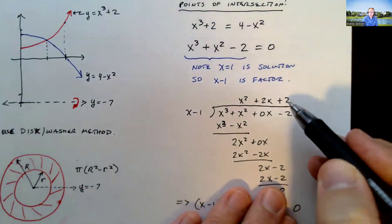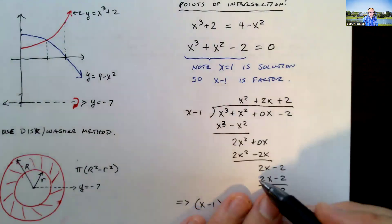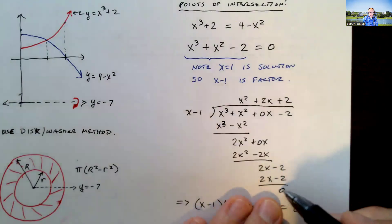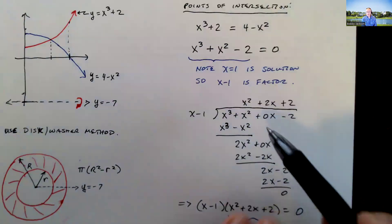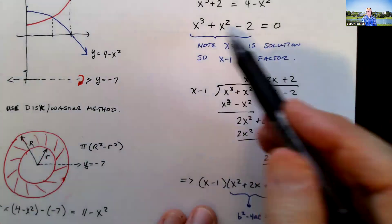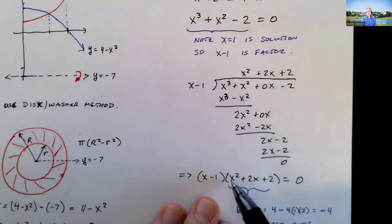Bring down our negative 2. x goes into 2x, 2 times. 2 times x minus 1 is 2x minus 2. Subtract, we get 0 as we should. The remainder should be 0. You can also do synthetic division if you know how to do that.